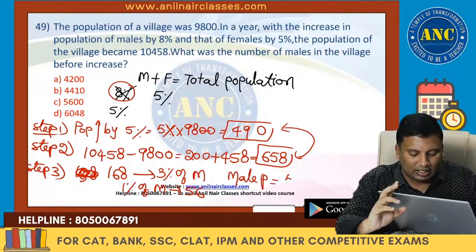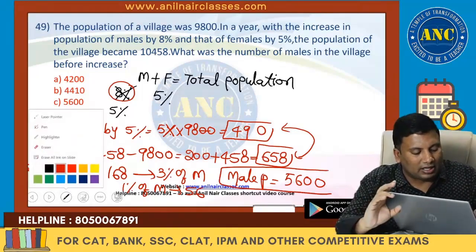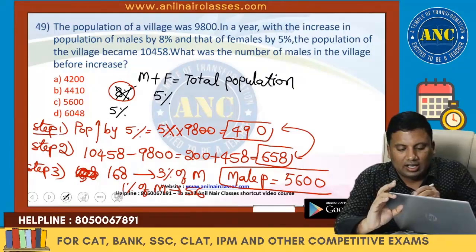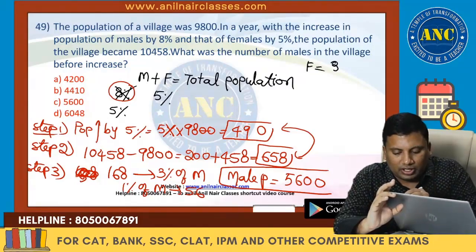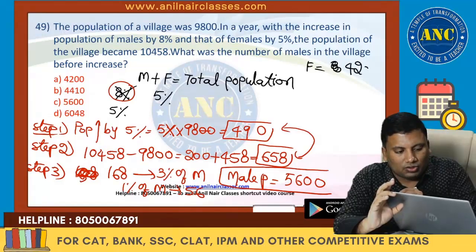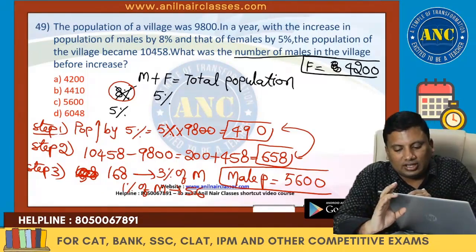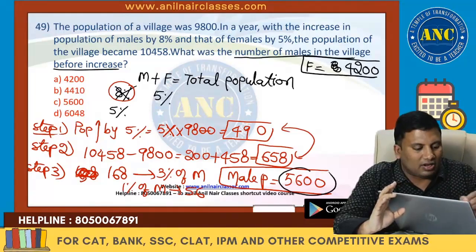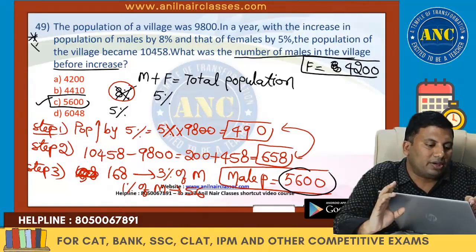Male population is 5,600. Female population will be 9,800 − 5,600 = 4,200. Female population is 4,200. The question asked: what was the number of males in the village before the increase? The answer is 5,600. Extremely important model.